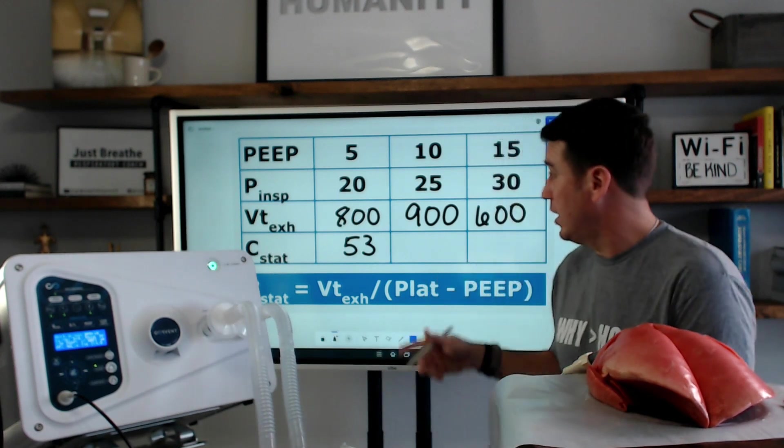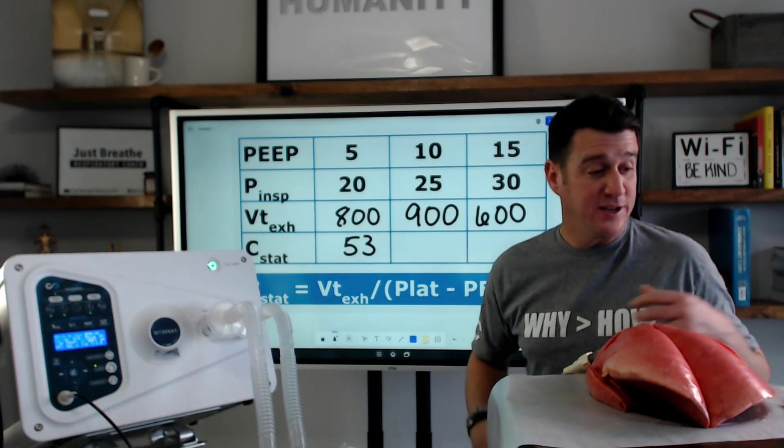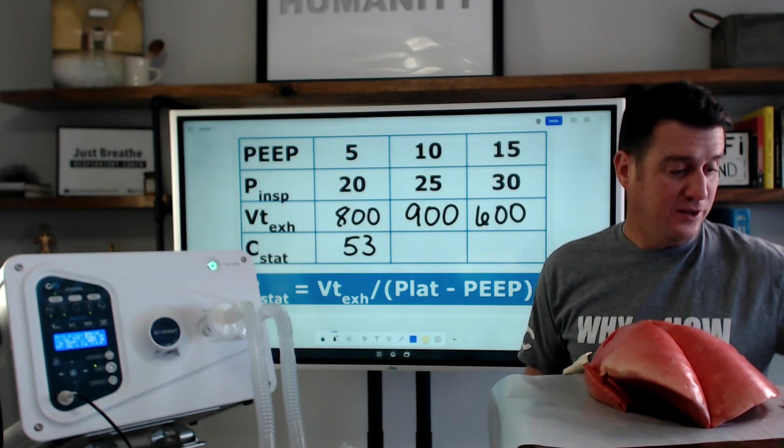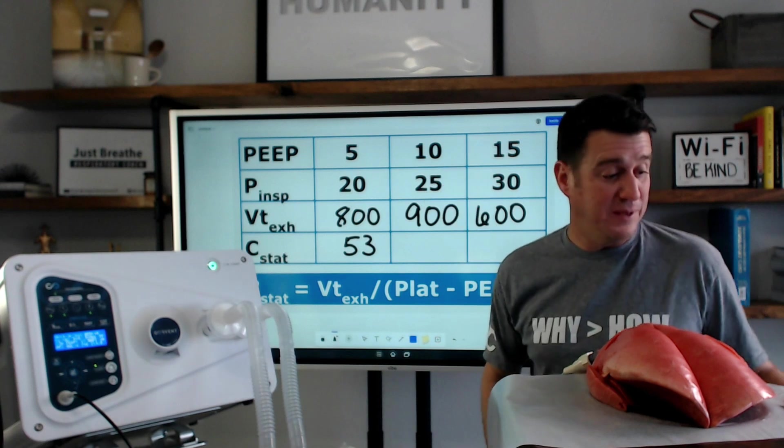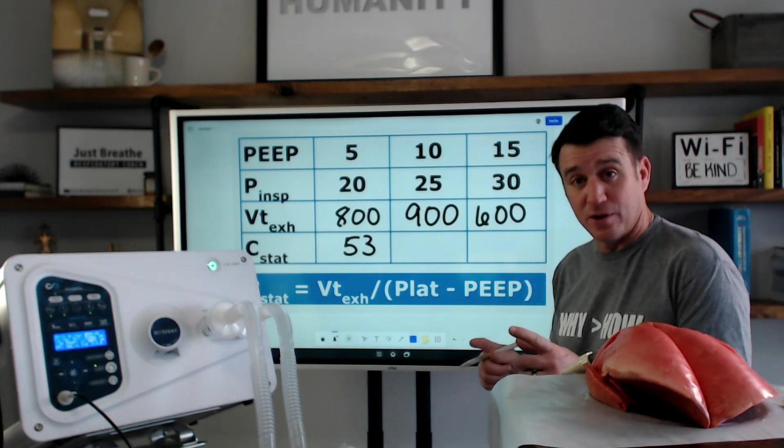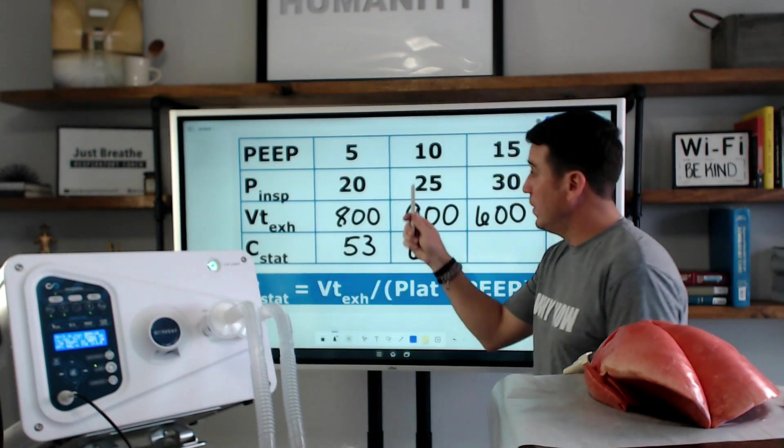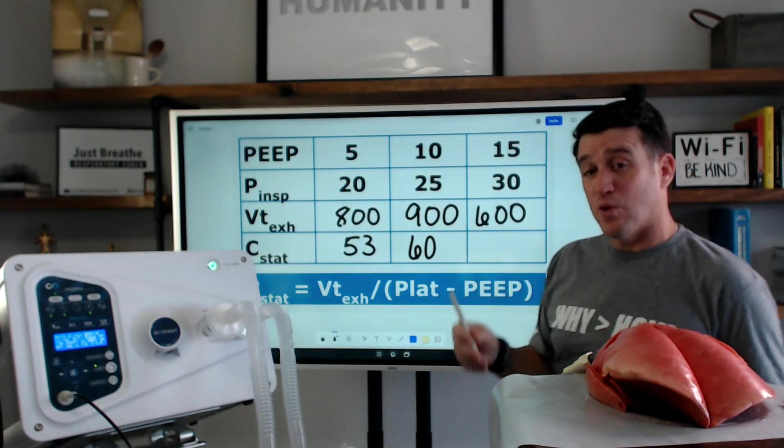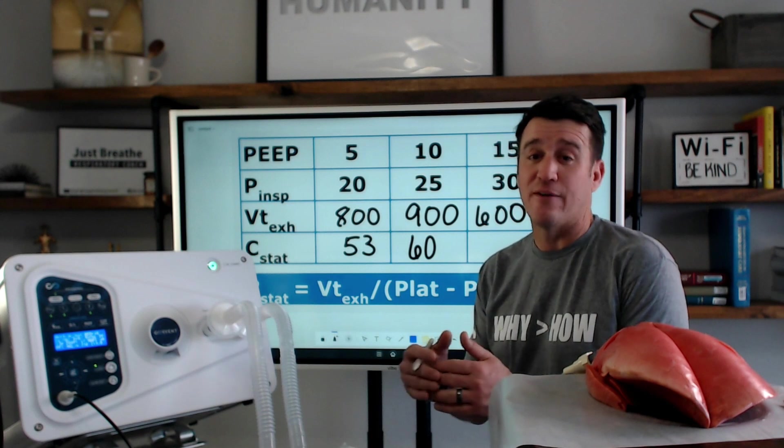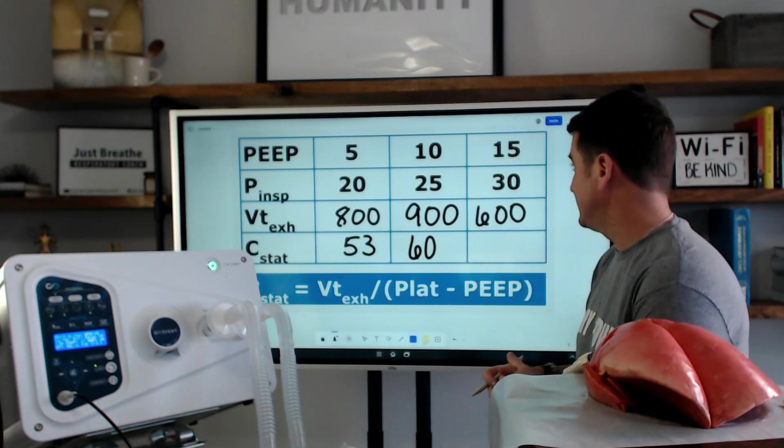Let's see what we have when we look at our PEEP of 10. So, now we're going to go 900 divided by 25 minus 10 would be 15 again. And this number is 60. When we went to a PEEP of 10, we recognized that we delivered 60 milliliters per every one change in centimeters of water pressure during the inspiratory phase.